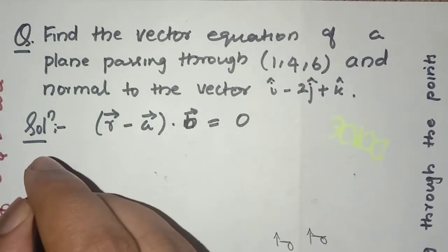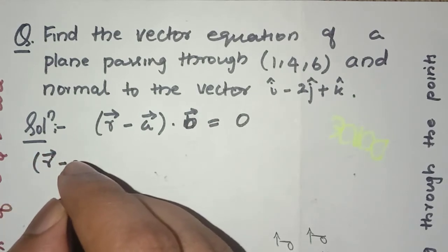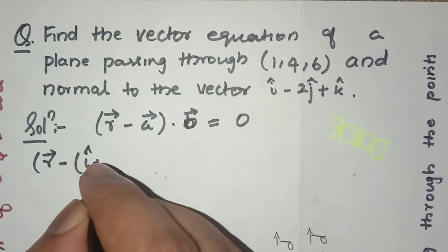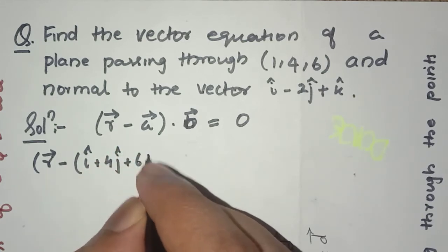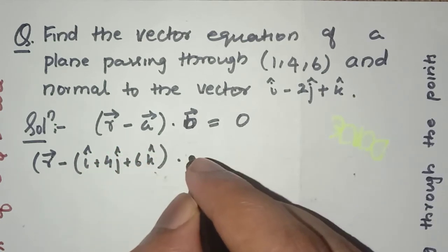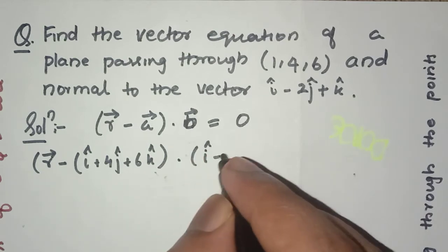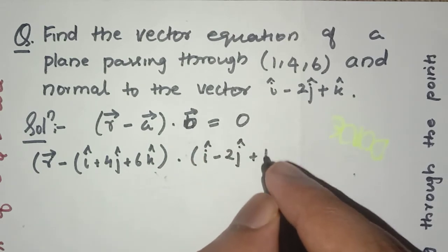Okay. So we can write this as (r minus i cap plus 4j cap plus 6k cap) dot (i cap minus 2j cap plus k cap).